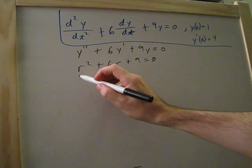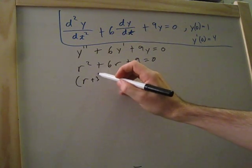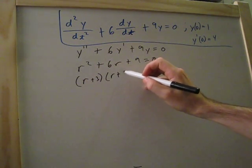It's equal to 0, and then we'll factor this, and so we'll get r plus 3, and r plus 3.